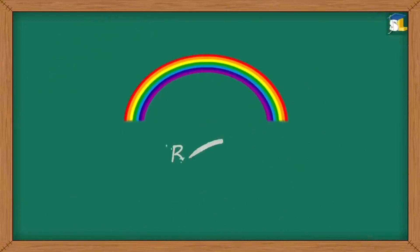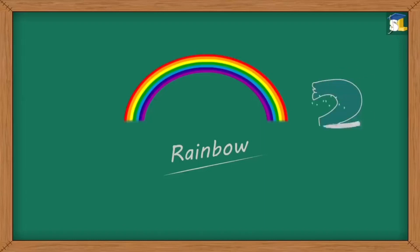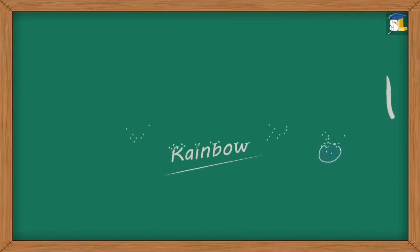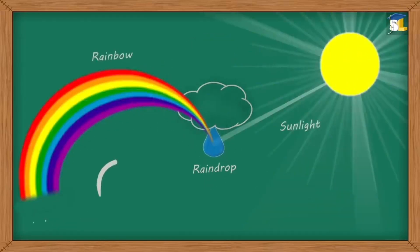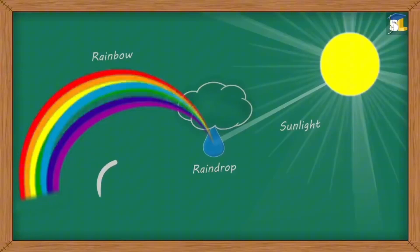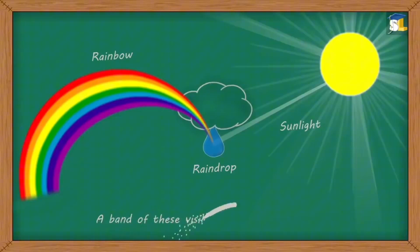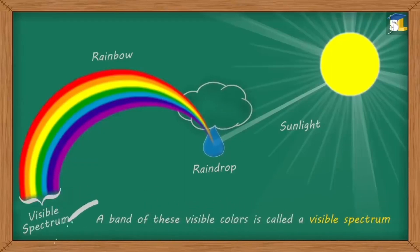It is such a beautiful rainbow. Have you ever wondered how it is formed? A rainbow is formed when raindrops split sunlight into different colors. Sunlight, or white light, consists of many colors. However, only a few of them are visible to us. A band of these visible colors is called a visible spectrum.